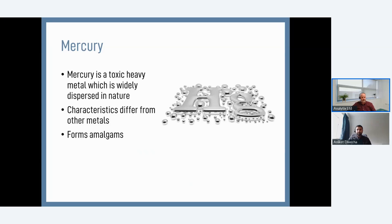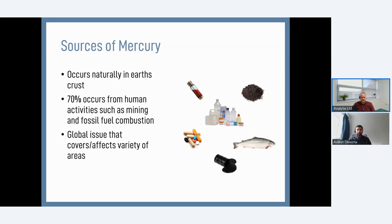Mercury itself is quite a tricky element — a toxic heavy metal, very widely dispersed throughout nature. Its characteristics are quite unique, which is why we really have to treat it differently to some of the other metals we may be looking for as a scientific community. It really comes down to the low boiling point that mercury has — it's liquid at room temperature, it can form amalgams with other metals like silver and gold, and it's very abundant. Approximately 30% of mercury sources are naturally occurring within the Earth's crust, but the overwhelming majority — around 70% — are from human activities.